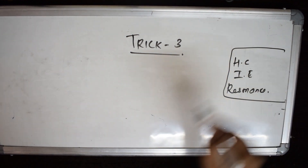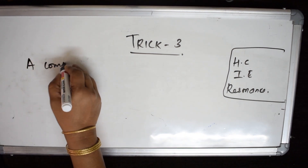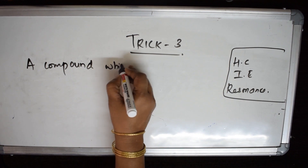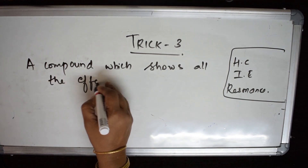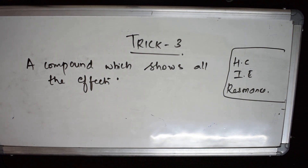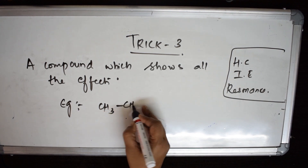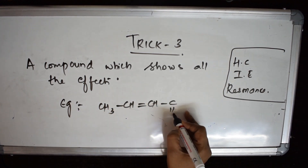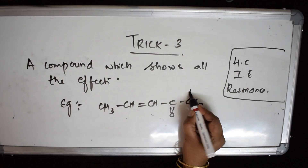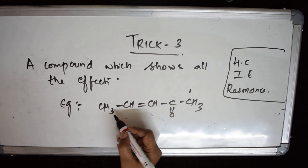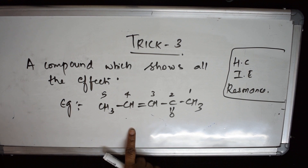They've asked you which compound shows all these effects. Let us write an example and explain. The compound is CH₃-CH=CH-C(=O)-OCH₃. As soon as the compound is given to you, start numbering it: one, two, three, four, five.